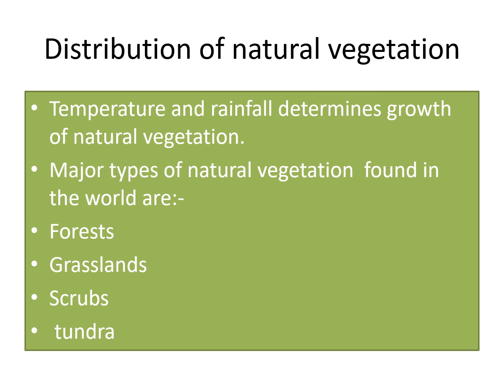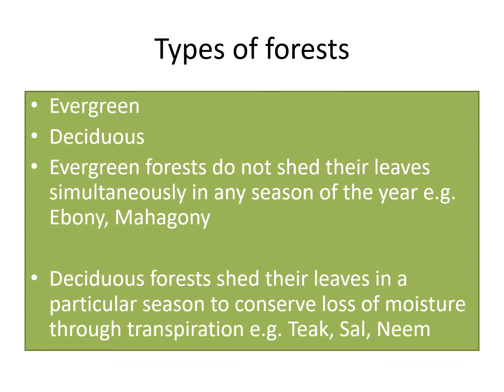Distribution of natural vegetation on the earth is dependent on two basic factors: temperature and rainfall. Major types of natural vegetation found in the world are forests, grasslands, scrubs and tundra. Grasslands — tropical and temperate — are found on all continents but known by different names. Tundra is a type of vegetation where only mosses and lichens are found; these areas are snow-covered and temperatures are below 0 degrees Celsius. Scrubs consist of thorny bushes and shrubs.